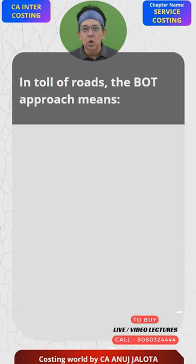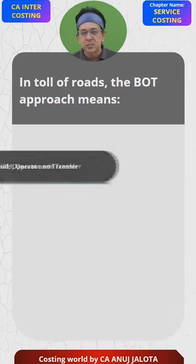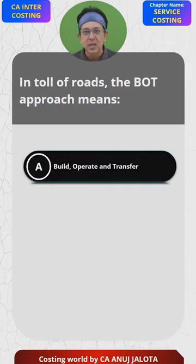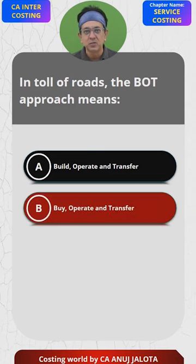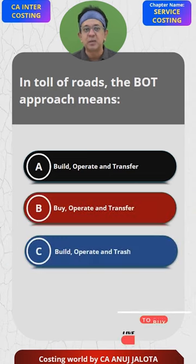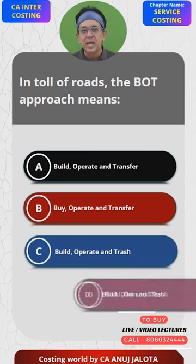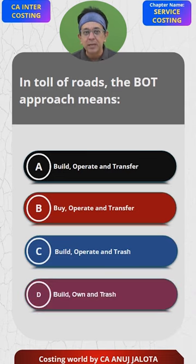In toll of roads, the BOT approach means: A. Build, Operate, Transfer. B. Buy, Operate, Transfer. C. Build, Operate, Trash. And D. Build, Own and Trash.